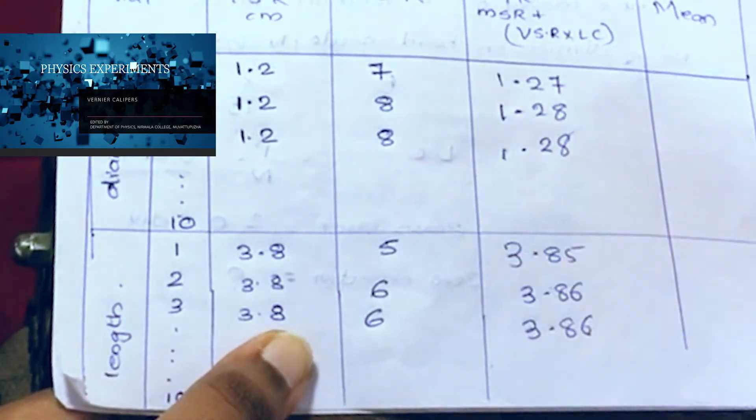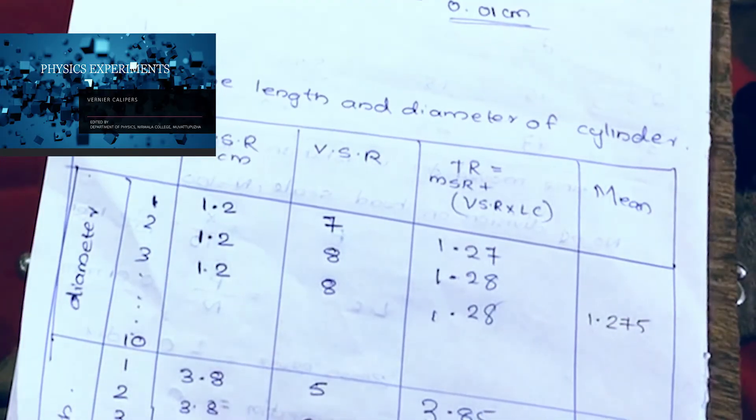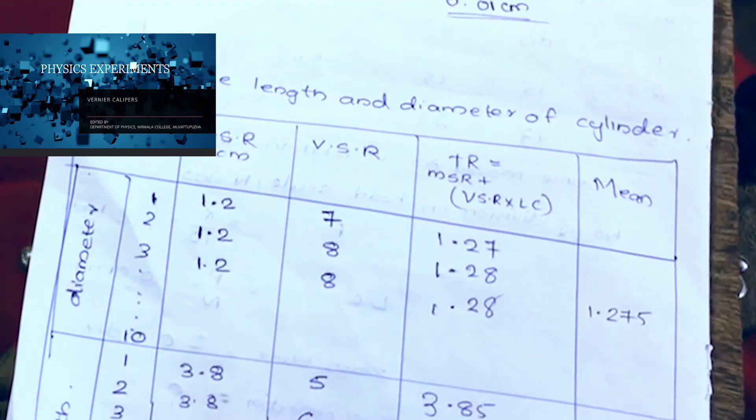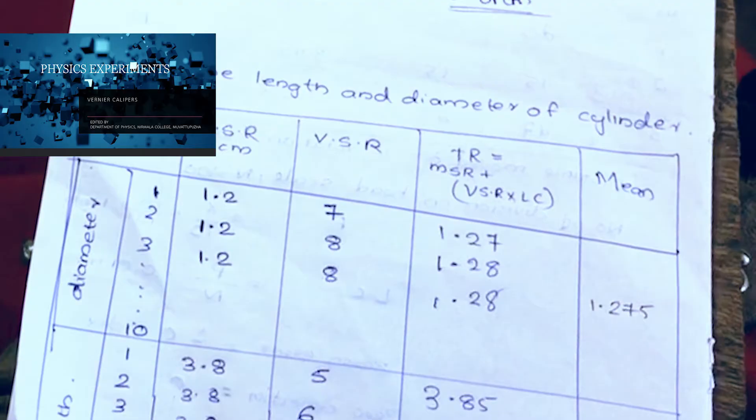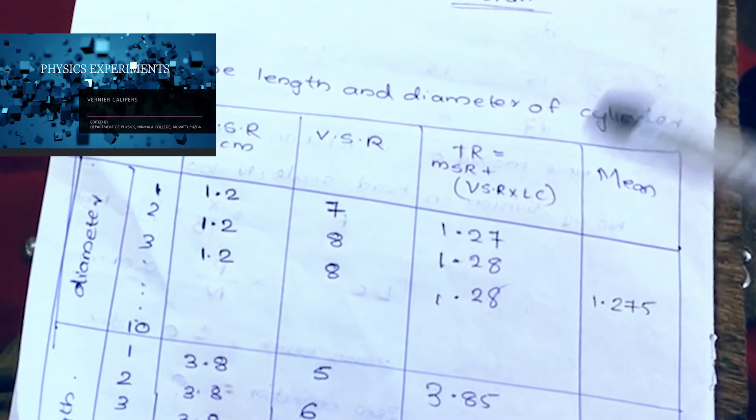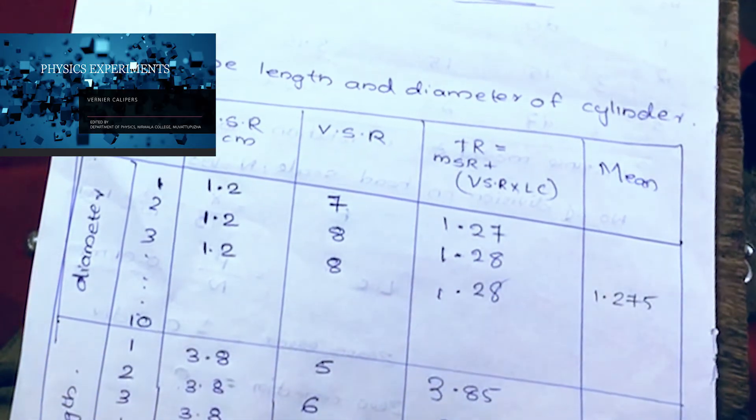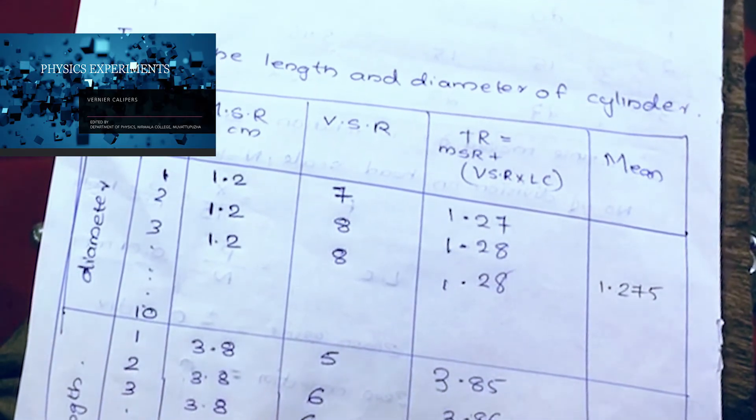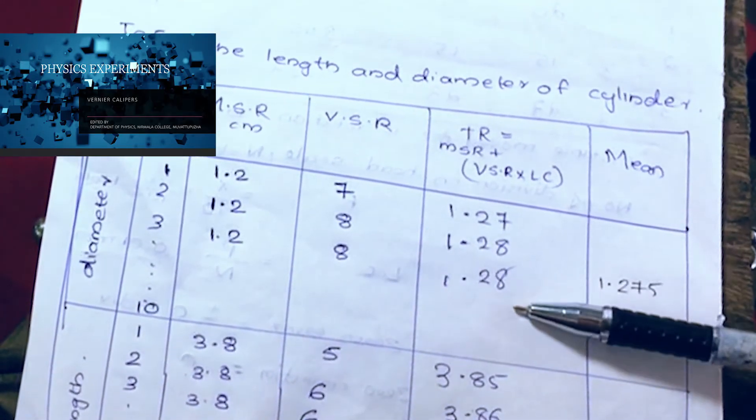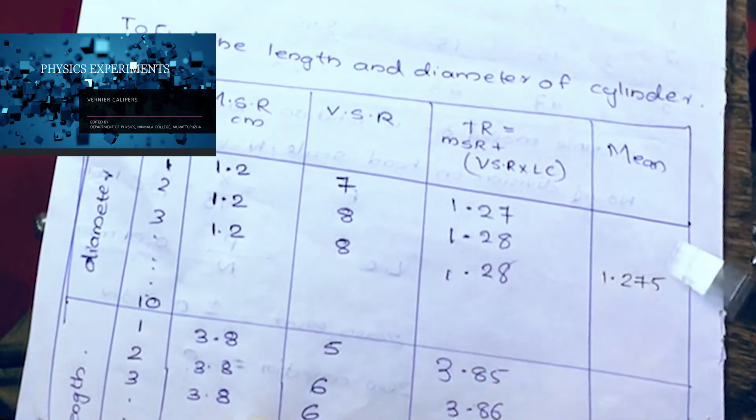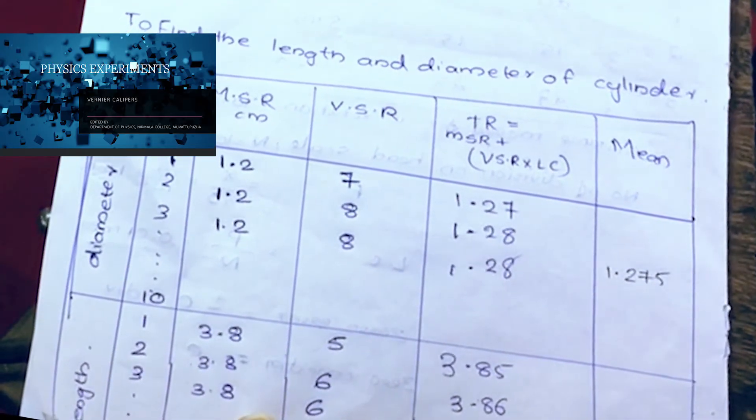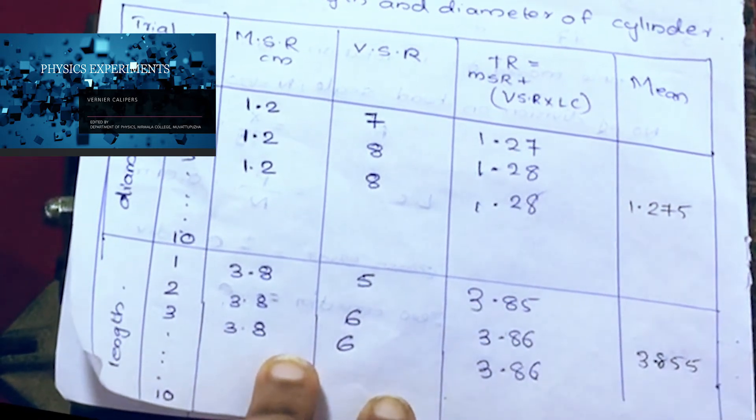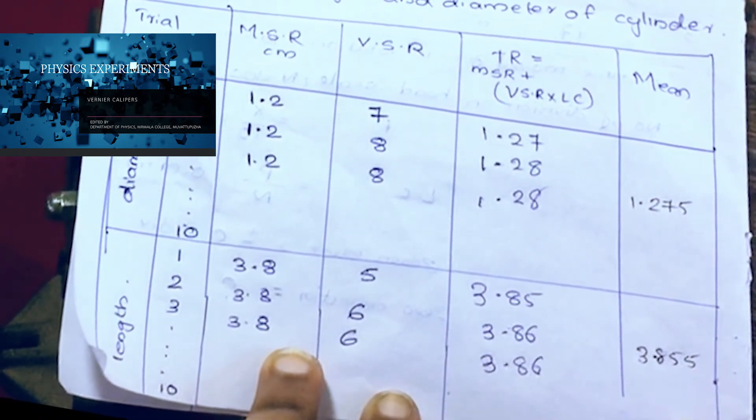Now let's find the mean. Total reading added divided by which readings have been added - here we have 3 readings. So 3 readings added, divided by 3, gives 1.275 for diameter. And length is 3 readings added, divided by 3, gives 3.855.